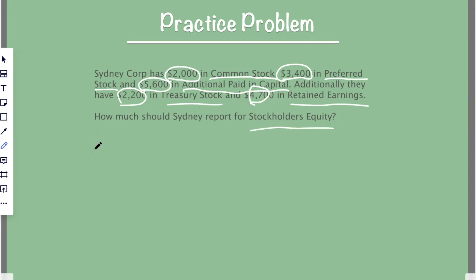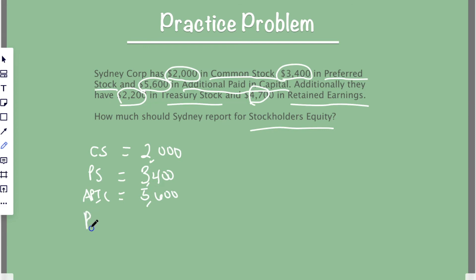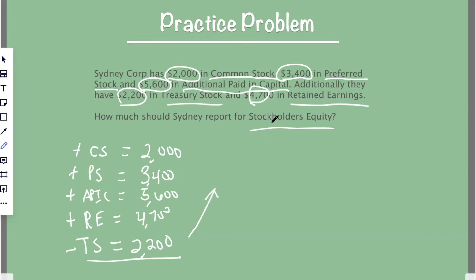We'll just follow the formula. Common stock equals $2,000 — add that. Preferred stock equals $3,400. APIC equals $5,600. Retained earnings equals $4,700. And treasury stock equals $2,200. Now all of them are added except for treasury stock — you always deduct that. So get out your calculators: $2,000 plus $3,400 plus $5,600 plus $4,700 minus $2,200. Stockholders' equity is $13,500.